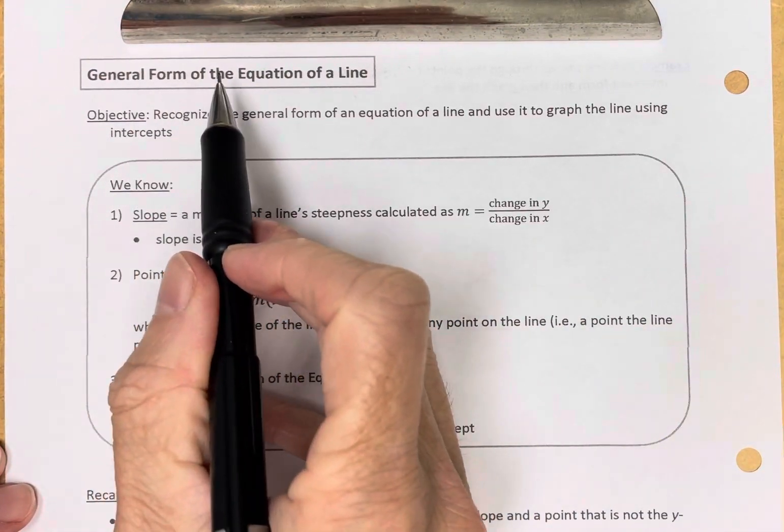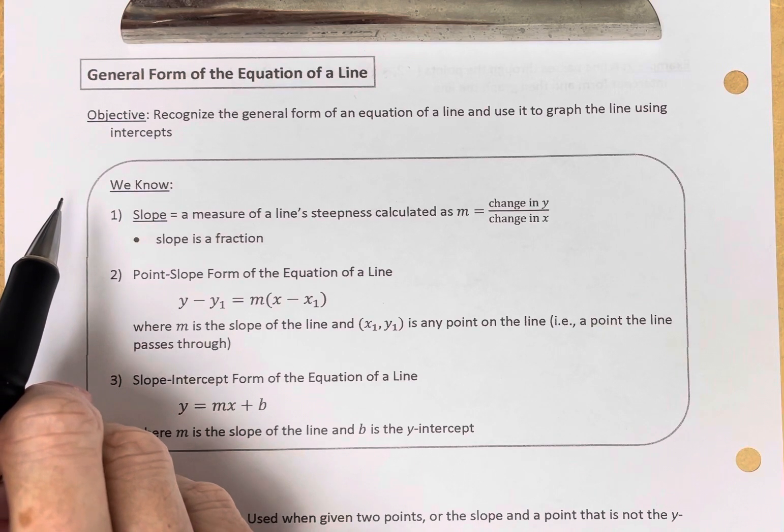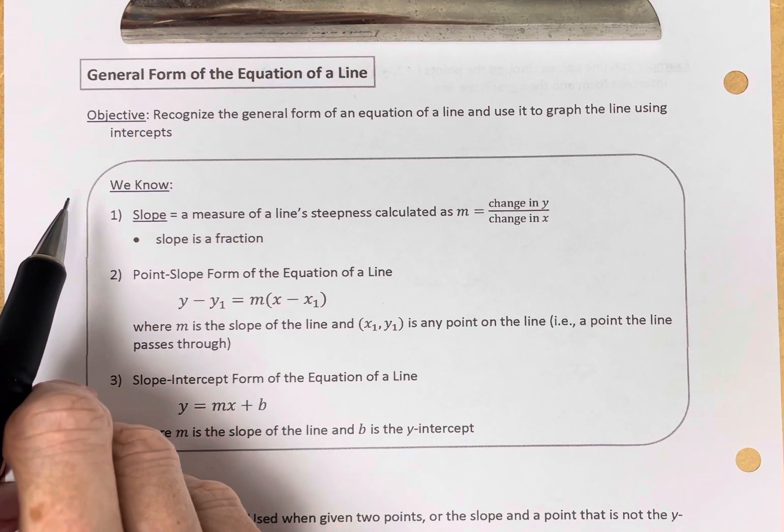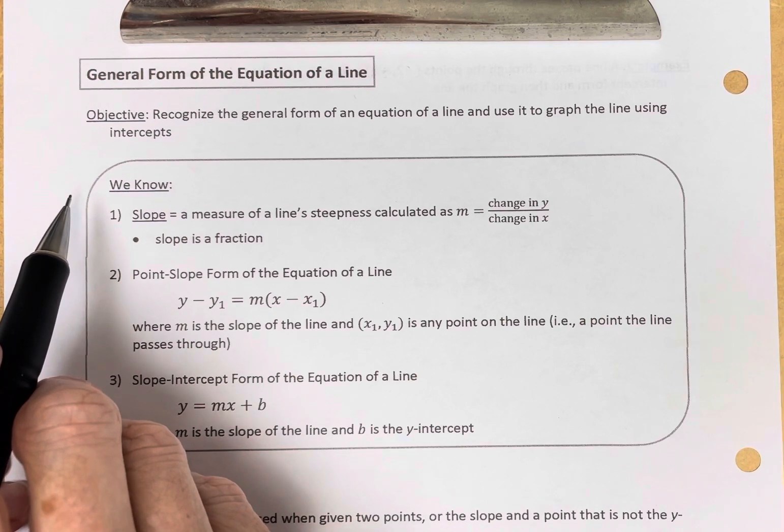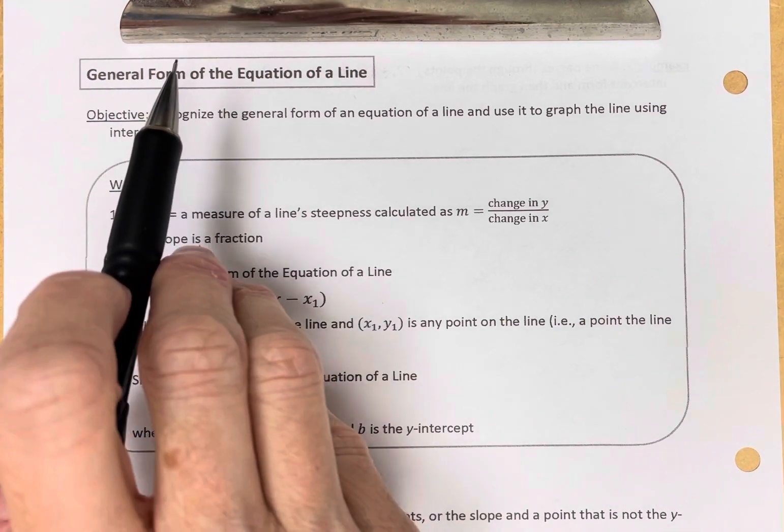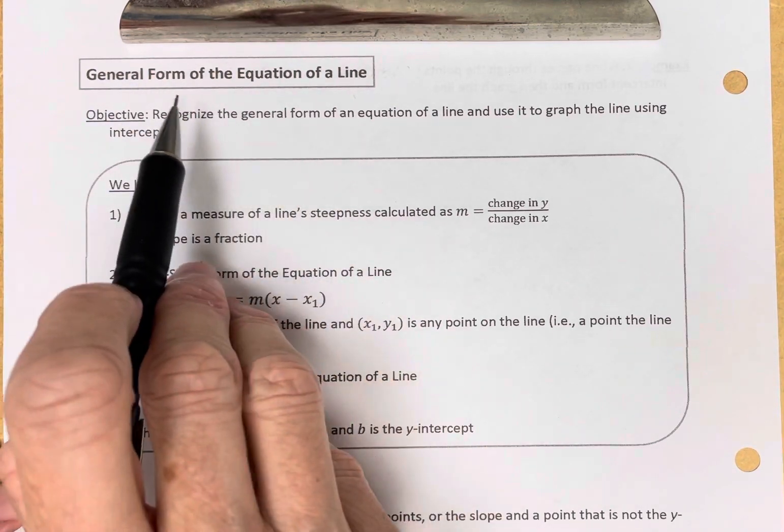The general form of the equation of a line. So we've looked at two forms thus far of the equation of a line, the slope-intercept form and the point-slope form. In this video, we're going to look at a third form of the equation of a line called the general form.